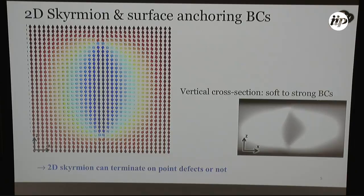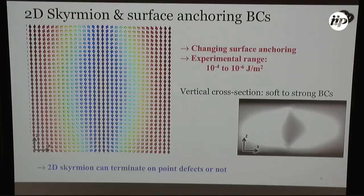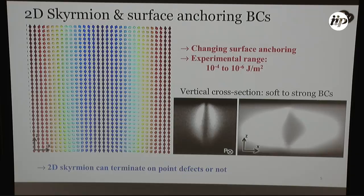But as we change the boundary conditions from strong to weak and finite, you can see that this structure changes and the point defects are no longer required by the boundary conditions, so they escape through the substrates, if you will. And therefore, now we have this relatively translationally invariant structure. So we can have both cases in our experiment.